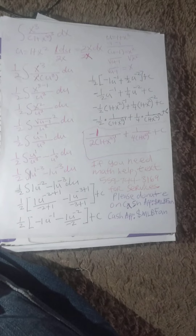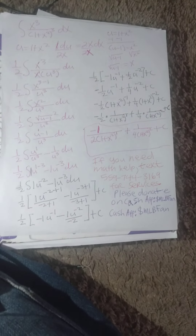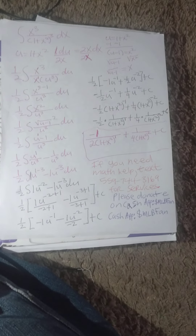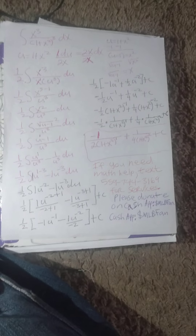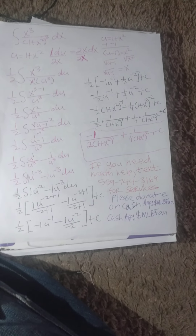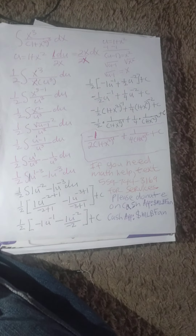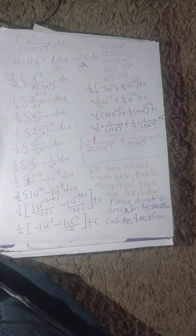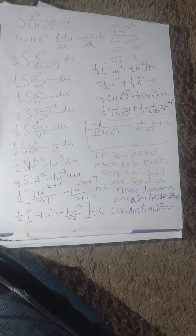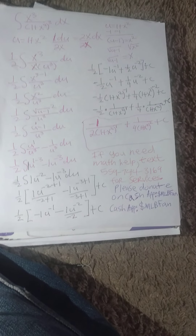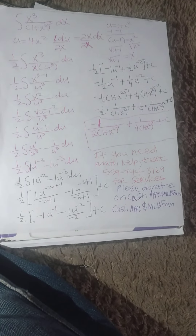So, this will simplify to negative 1 divided by 2 times 1 plus x squared to the power of 1, plus 1 divided by 4 times 1 plus x squared squared, plus c. If you need online math tutoring, please text 559-744-3169 for services. Please donate on the Cash App with the dollar sign up front: MLBFAN. Let's make math fun and let's learn together.